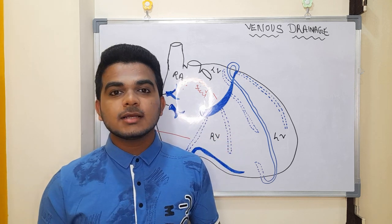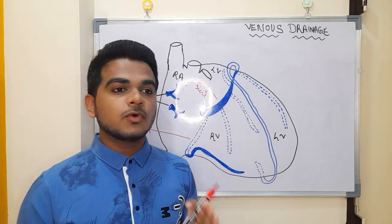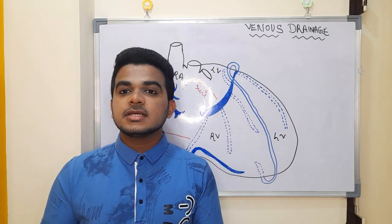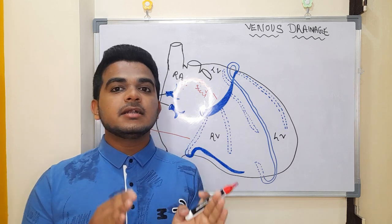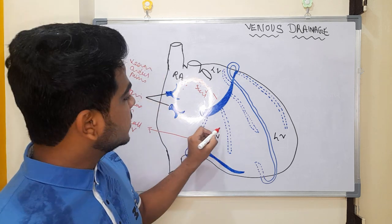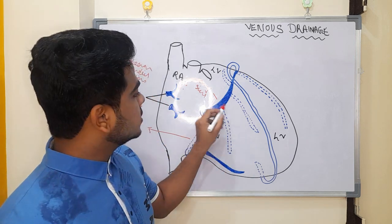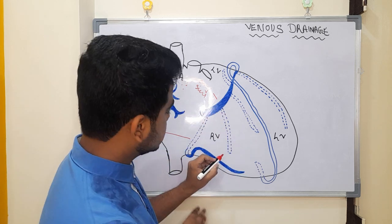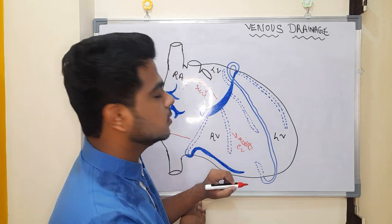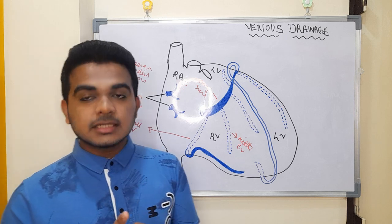The middle cardiac vein runs between the right ventricle and left ventricle — that is the posterior interventricular groove. On the posterior surface of this interventricular groove, the posterior interventricular artery is present, which is a branch of the right coronary artery. The middle cardiac vein accompanies the posterior interventricular artery and drains into the middle portion of the coronary sinus.